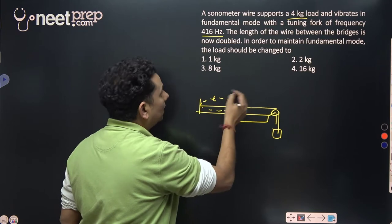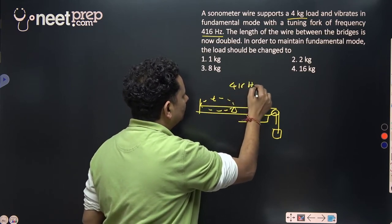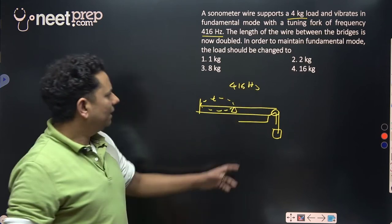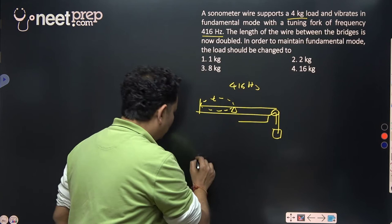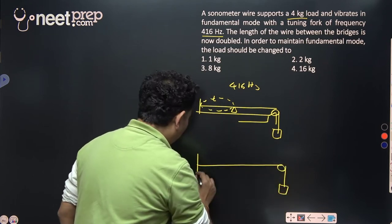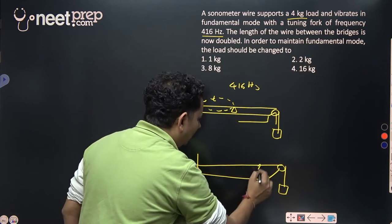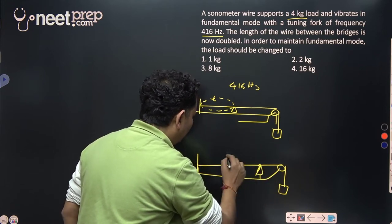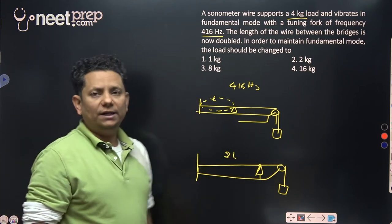The wire is an external source in the fundamental mode with a frequency of 416 hertz. Now if we increase the length, this is the sonometer, and the initial length is 2L.